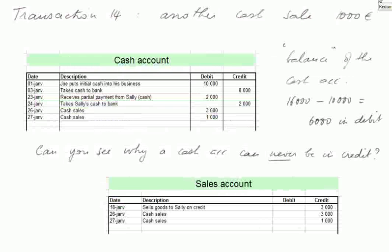Transaction 14: another cash sale of 1,000 euros, for 10 items. The cash account is debited 1,000 euros, giving a cash account balance of 6,000 euros in debit (16,000 minus 10,000). As a point to consider: can you see why a cash account can never be in credit? The sales account is credited 1,000 euros.